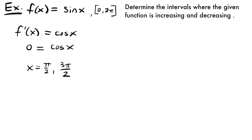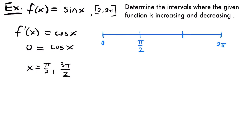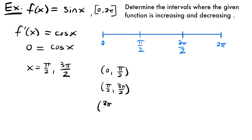Drawing the number line, this case is a little different because we have a closed interval from 0 to 2π. We label the endpoints 0 and 2π, then place our critical values π over 2 and 3π over 2 in between. This gives us three intervals: 0 to π over 2, π over 2 to 3π over 2, and 3π over 2 to 2π.